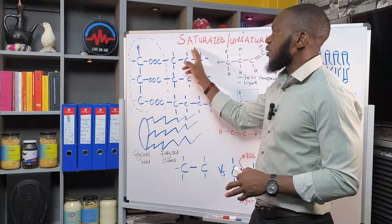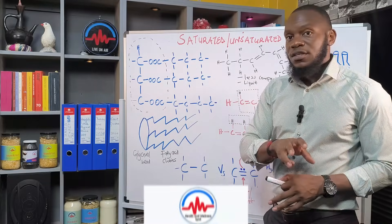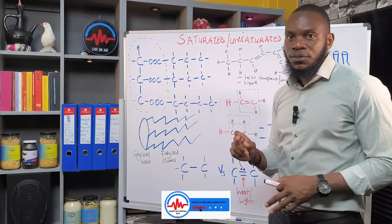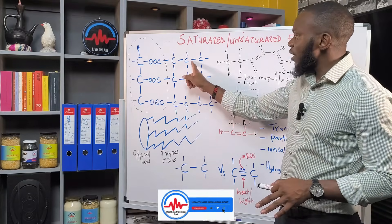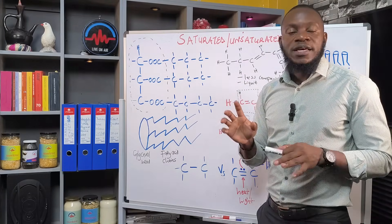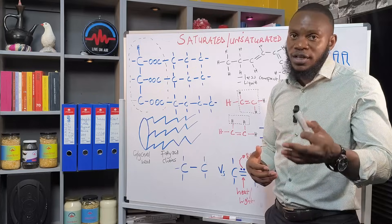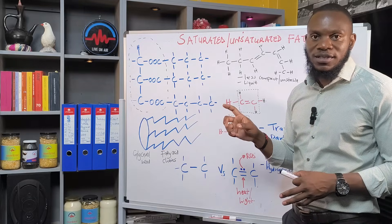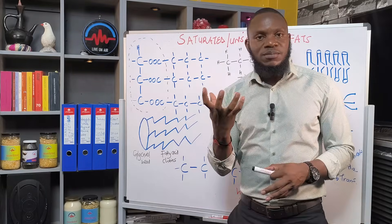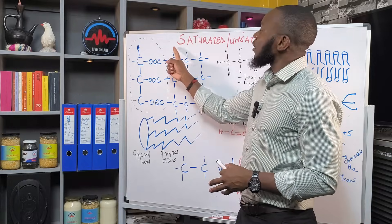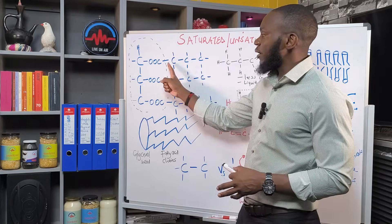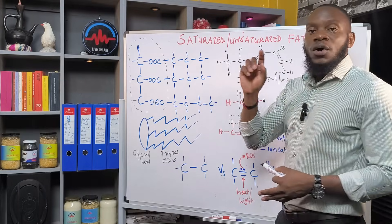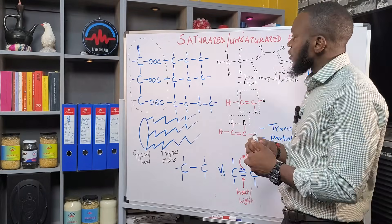Hydrogen ions are the ones that actually determine saturation and unsaturation. If these bonds are single bonds, that is what we call saturation — they have the maximum number of hydrogen ions bonded to that carbon, making it very stable. They hold it close so there's no reaction going on; they are not easy to release the hydrogen ion. That's what we call saturation.